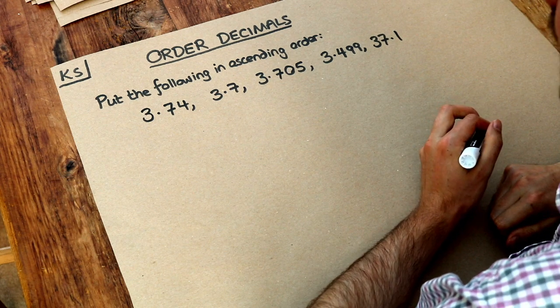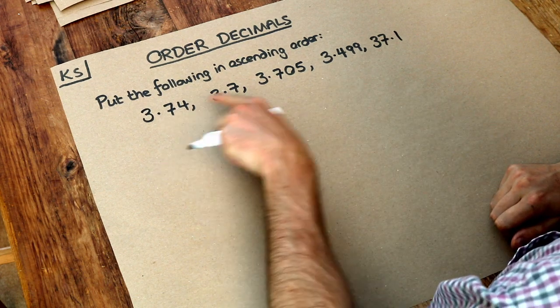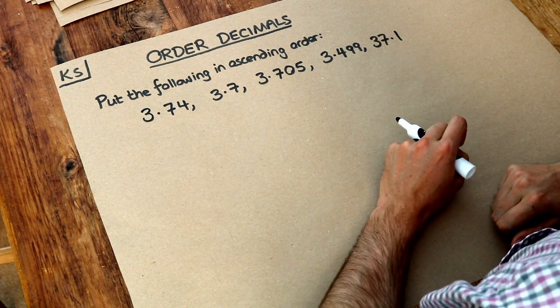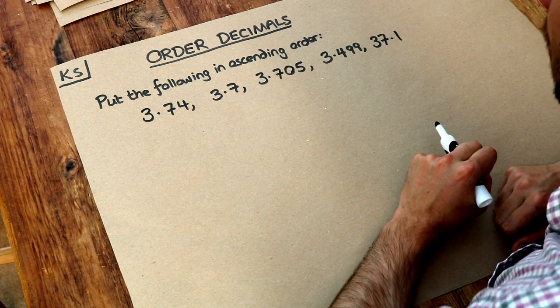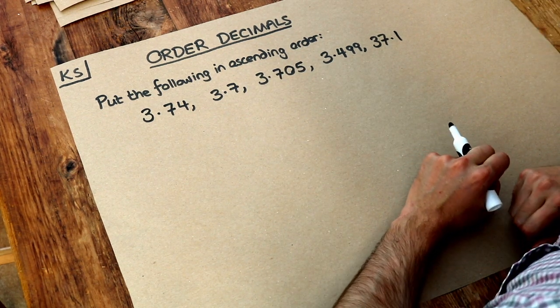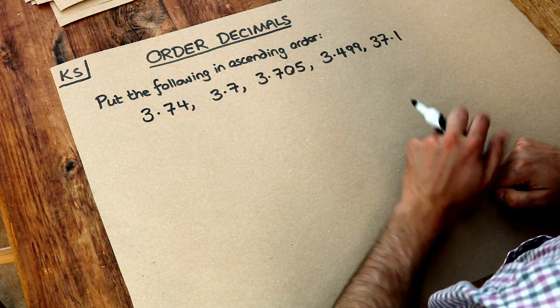Hello and welcome to Dr Frost Math's key skill video on ordering decimals. We have these different decimal numbers here and we want to put them in ascending order, that means from smallest to largest. What makes them decimals is that we have digits after the decimal point.